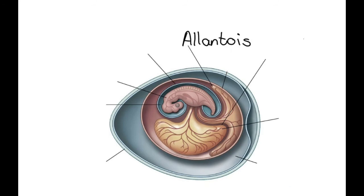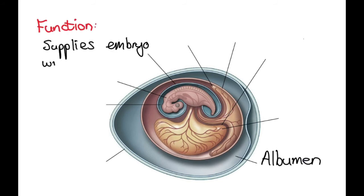Then we have the allantois, and the function of the allantois is to store waste. So this is a temporary waste storage, and then we have our albumin. The albumin is the white part of the egg, and that's going to supply the embryo with water and nutrients.